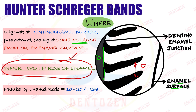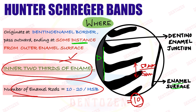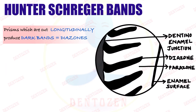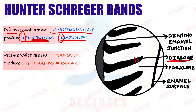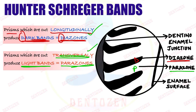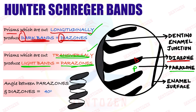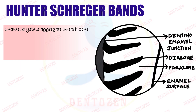The width of a band is 50 micrometers and the width of one enamel rod is 5 micrometers, so approximately 10 enamel rods are present in one band — with some sources saying 10 to 20 enamel rods per Hunter-Schreger band. Regarding naming: prisms or rods cut longitudinally appear as dark bands and are known as diazones; prisms cut transversely appear as light bands and are known as parazones. The angle between diazones and parazones is 40 degrees — an important entrance exam point.